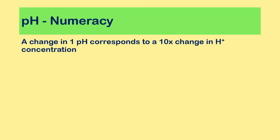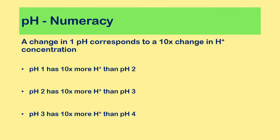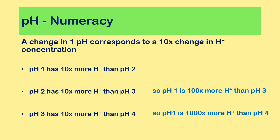For the pH to change by one unit, the concentration of H+ ions needs to change by 10 times. So pH 1 has 10 times more hydrogen ions than pH 2, pH 2 has 10 times more than pH 3, and pH 3 has 10 times more than pH 4. This means pH 1 has 100 times more H+ than pH 3, and 1000 times more H+ than pH 4. Every time you change one pH unit, you change the H+ concentration by a factor of 10.